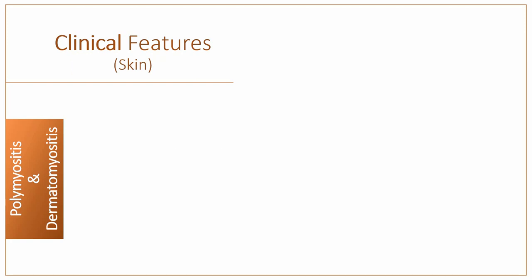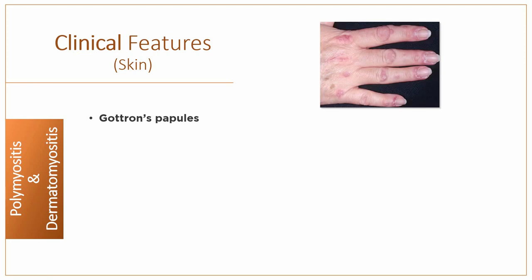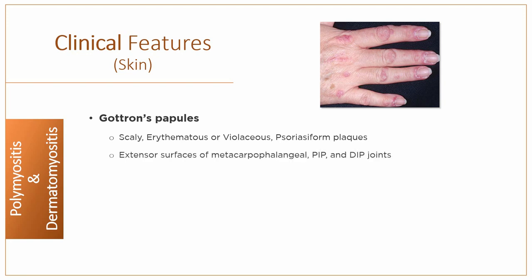Dermatomyositis is myositis plus skin changes. The typical skin change is Gottron's papules — these are scaly, erythematous or violaceous psoriasiform plaques occurring over the extensor surfaces of metacarpophalangeal, proximal interphalangeal or distal interphalangeal joints, and may also be seen on elbows and knees. These papules are pathognomonic when present with elevated creatine kinase and muscle weakness.